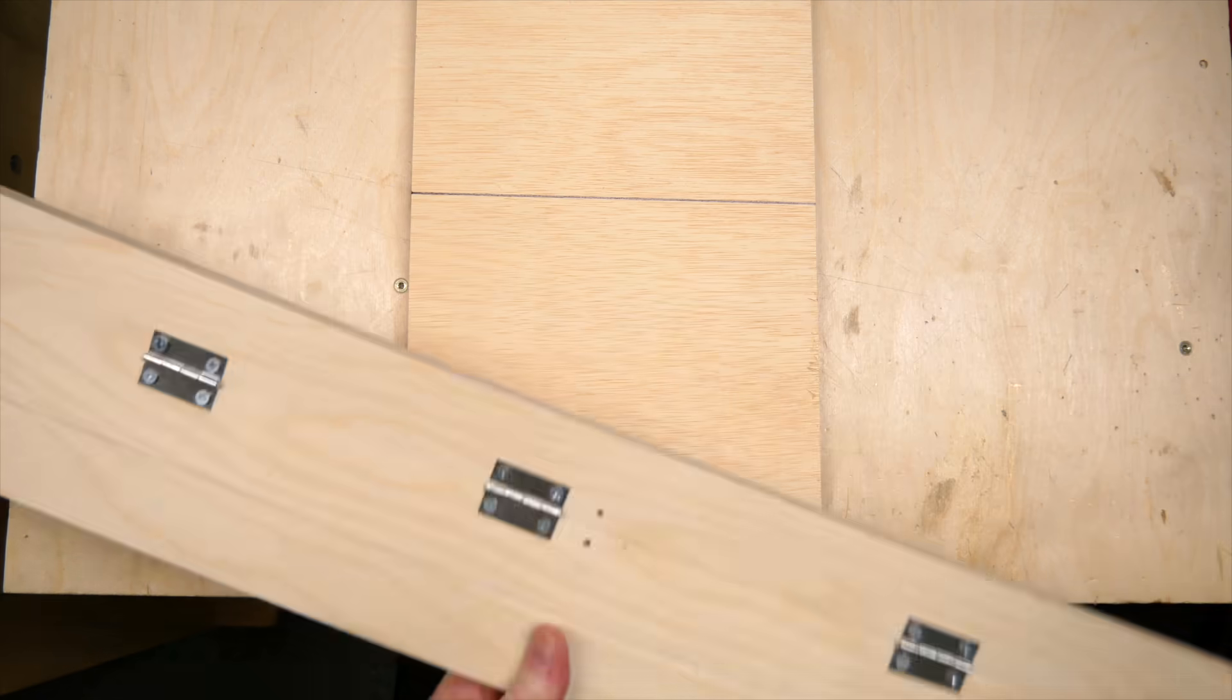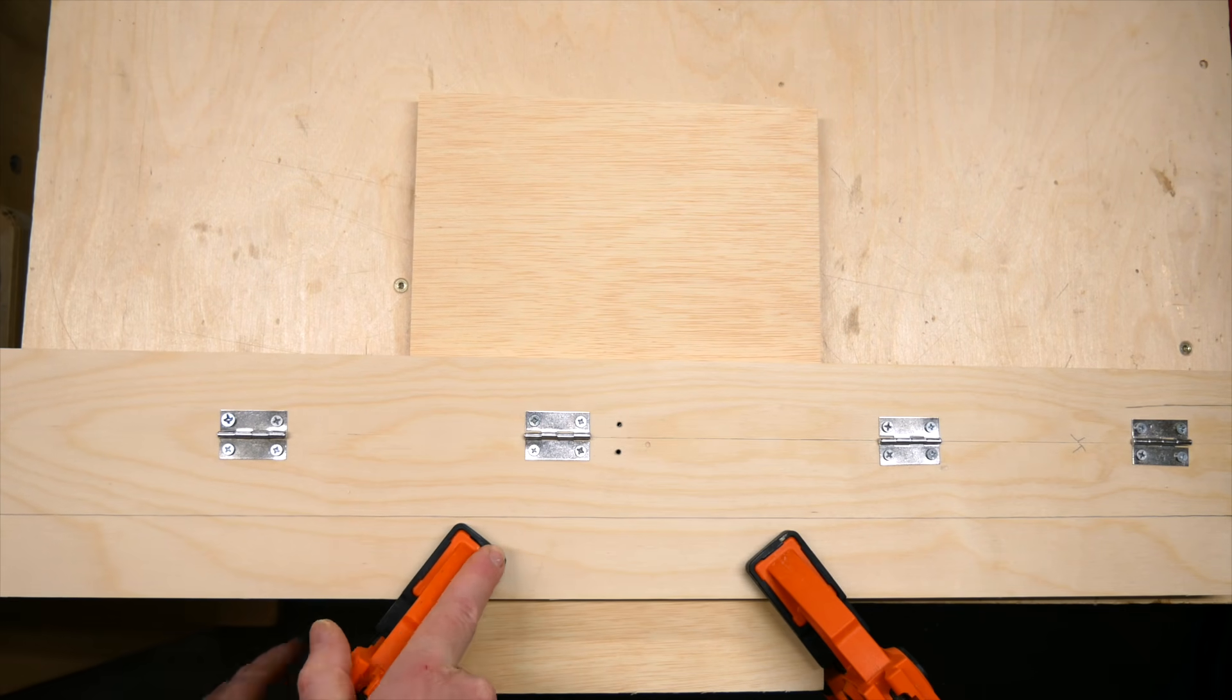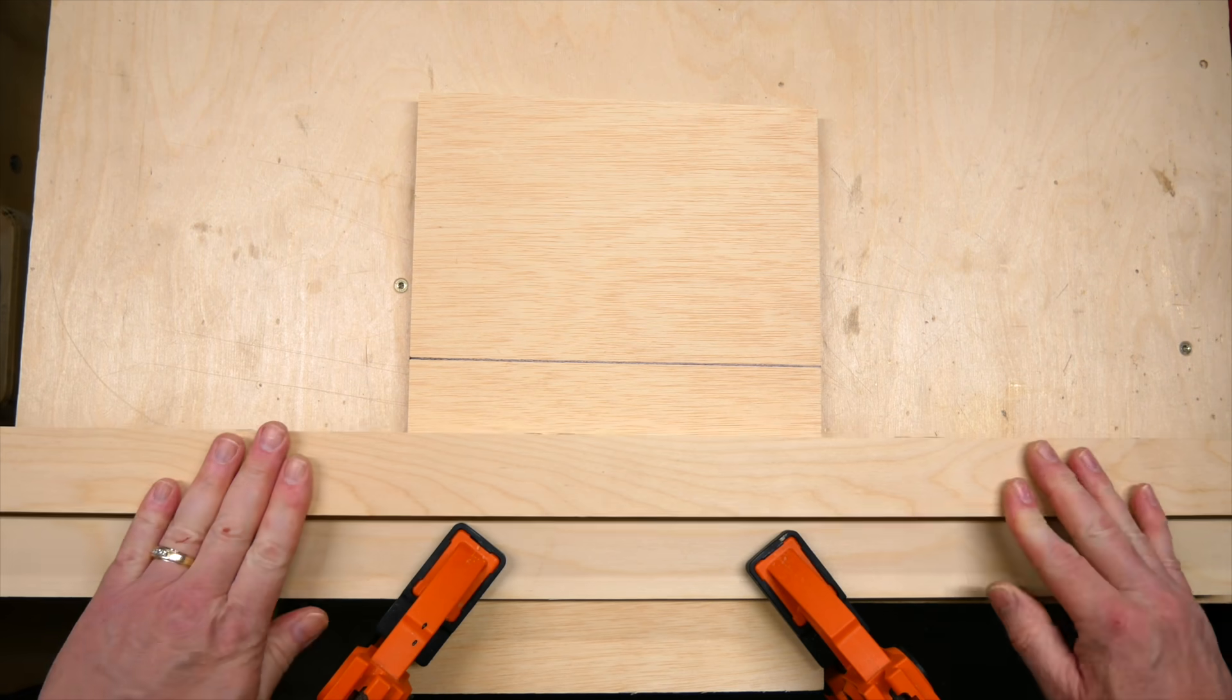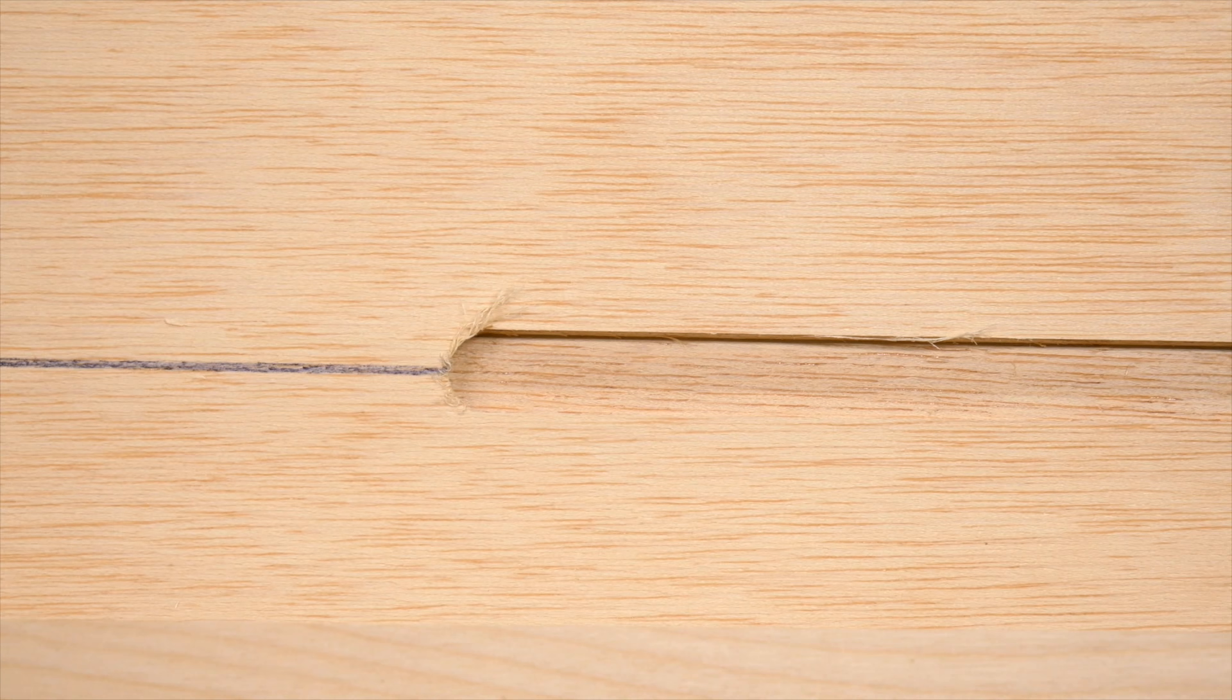Using it is simple. Place the front edge right on the line, clamp it down, fold back the spacer, and cut right down the line. It's that easy. So let's get to it.